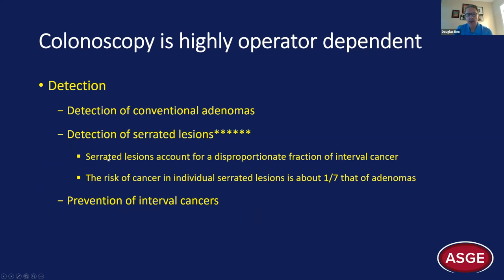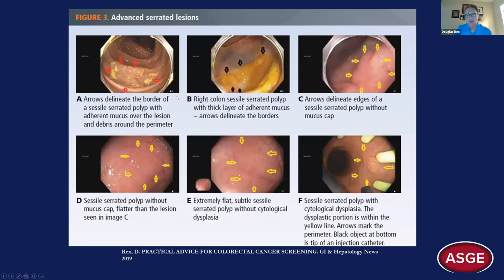Serrated lesions are missed more than conventional adenomas. If you look at interval cancers — where patients get cancer after a colonoscopy before their next scheduled exam — based on molecular features, these cancers appear to have gone through the serrated pathway disproportionately. Yet individual serrated lesions are about one-seventh as dangerous as conventional adenomas of similar size. They contribute disproportionately to interval cancers because they're more likely to be missed.